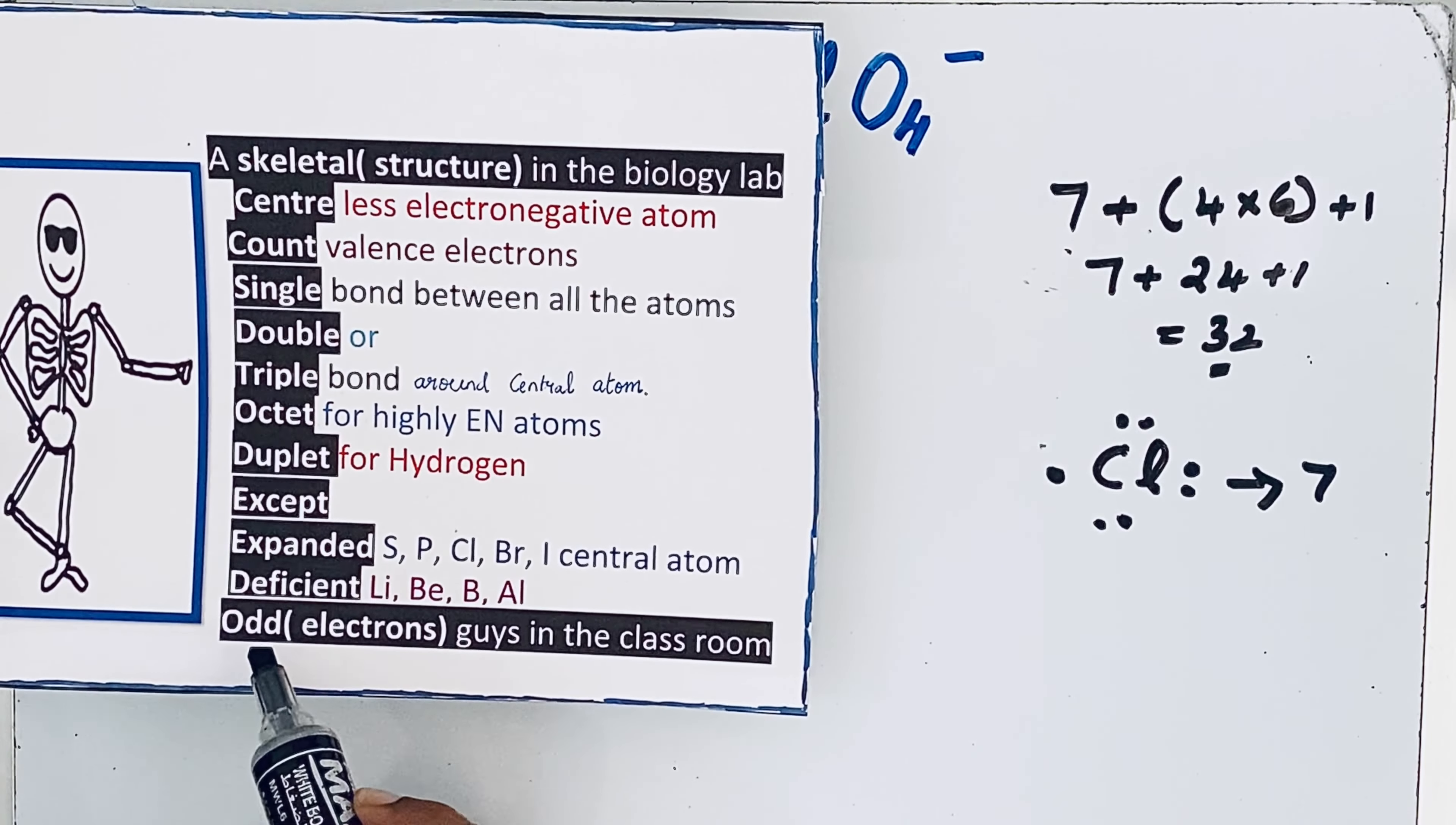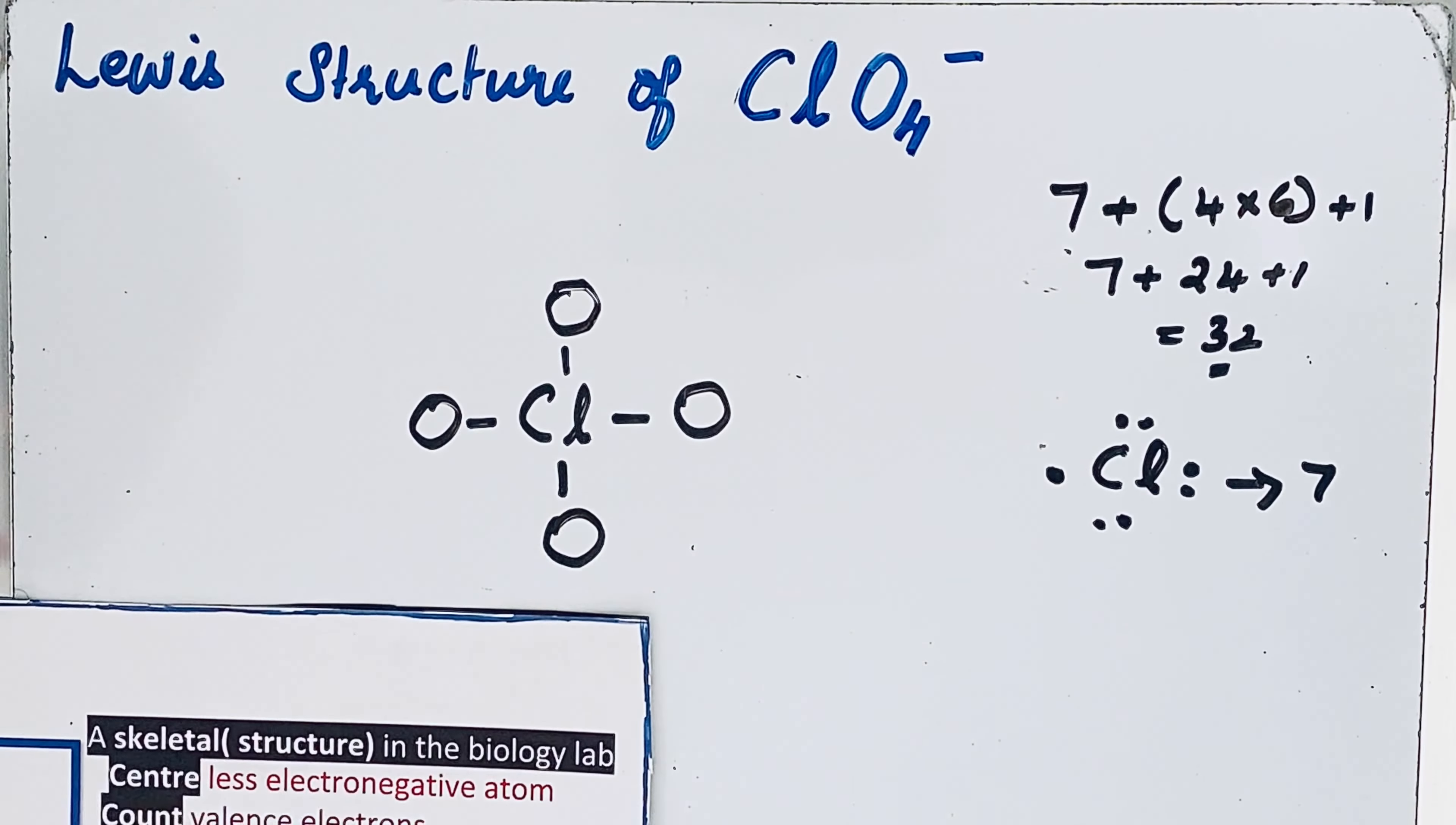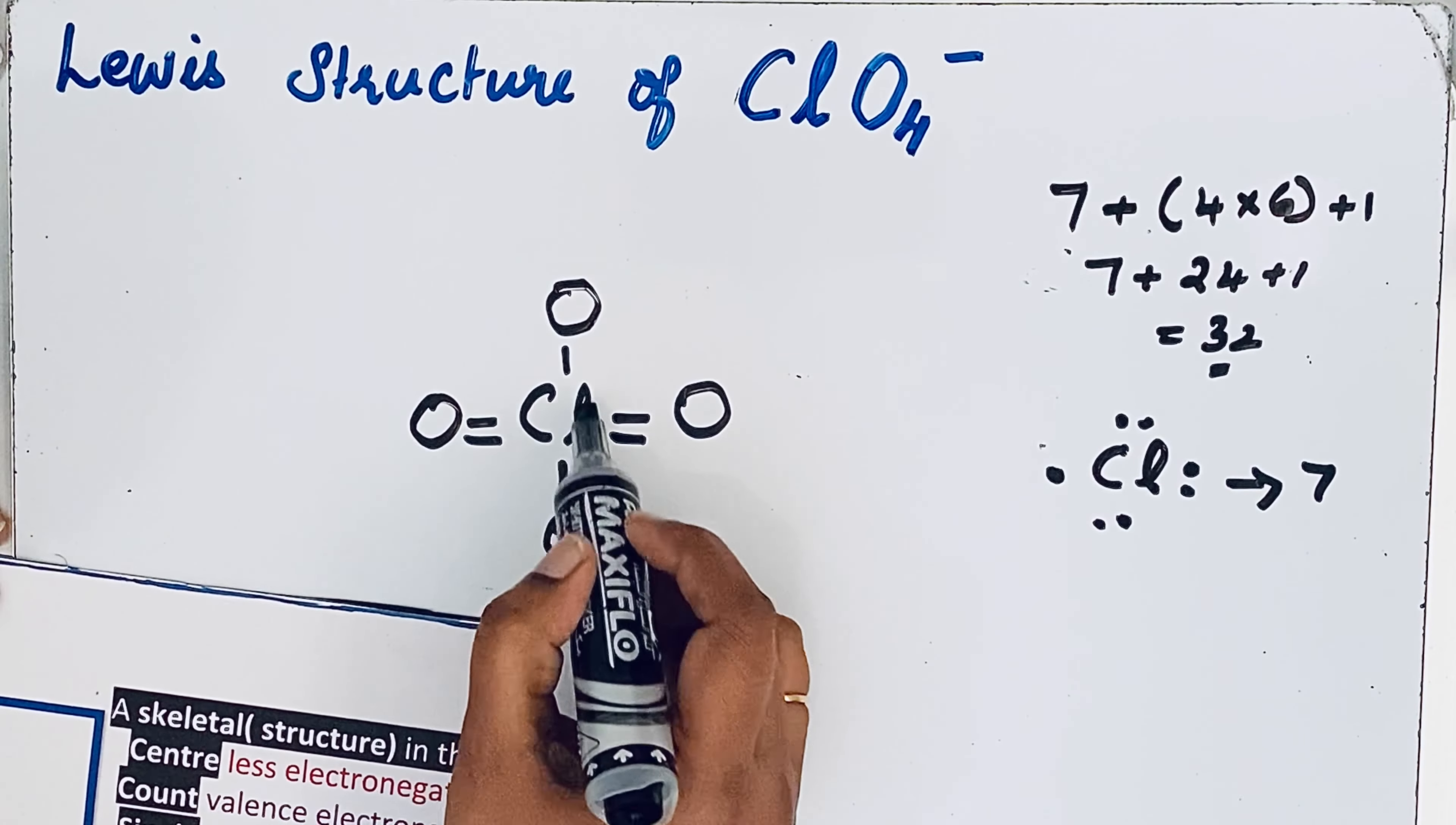Expanded, deficient, odd guys in the classroom. Expanded means sulfur, phosphorus, chlorine, bromine, iodine as central atom. If they are as a central atom, they can get more than eight. So we're going to draw seven bonds. Already four bonds are there, so we can put three more bonds: electrons five, six, seven.